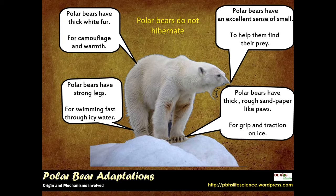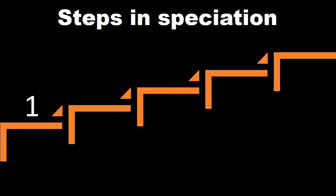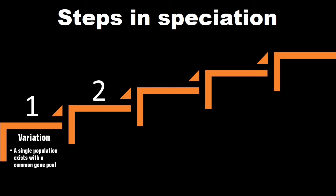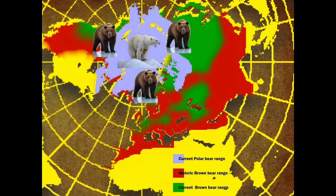When a new species arises from an existing species, the two species will no longer be able to interbreed because there is no gene flow between them — because they were isolated. So after variation, the next step would be isolation of the populations. The isolation can be due to a barrier that divides them, or they might still occupy the same area but have different preferences.